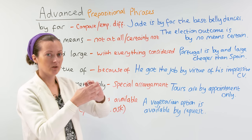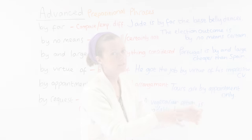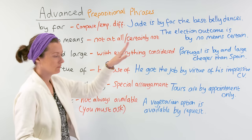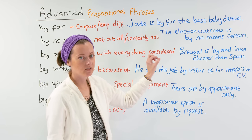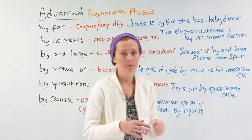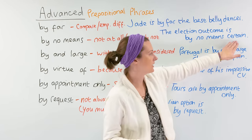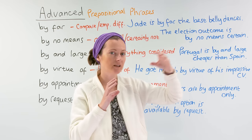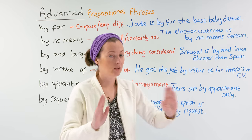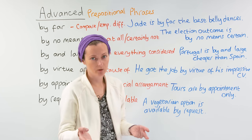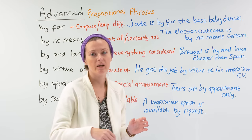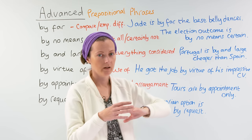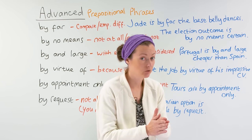In that sentence, I moved the prepositional phrase 'by far' to the end of the sentence. The next example is 'by no means,' which means not at all or certainly not. Example: 'The election outcome is by no means certain' — right now we don't know who will win. 'Certain' means 100% sure, but 'by no means certain' changes the meaning to the opposite: we're not certain, we don't know. Another example: 'The show is by no means over' — it's definitely not over, the show will continue.